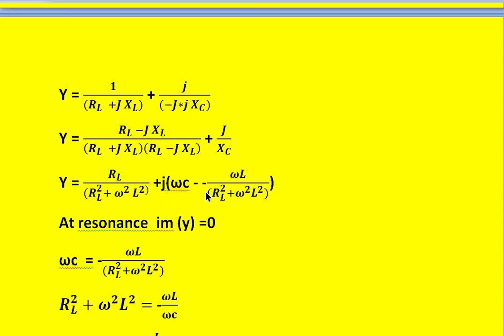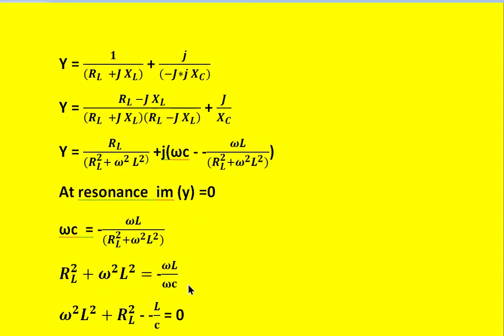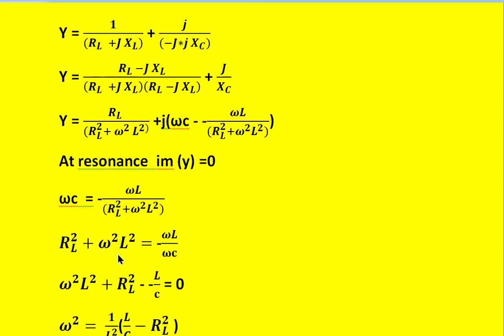From this, by rearranging these terms, the equation becomes: ω·C equals ω·L divided by (R_L squared plus ω²·L²). Here, ω means ω_R, the resonance frequency. From this, it can be rearranged to: R_L squared plus ω²·L² equals ω·L divided by ω·C.